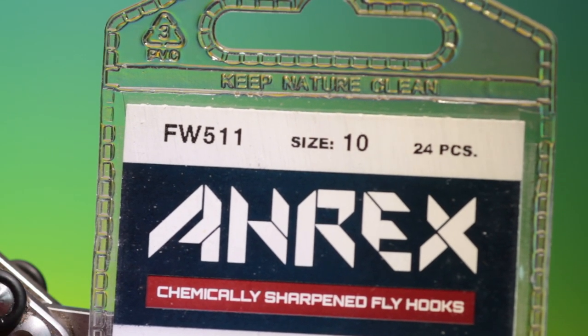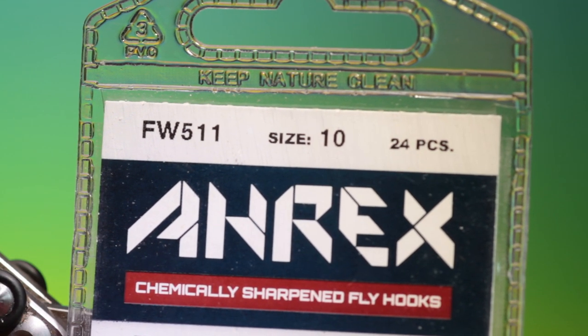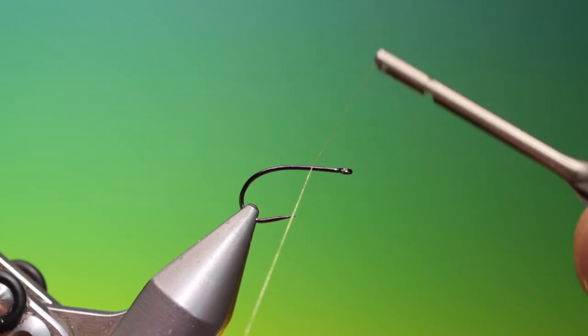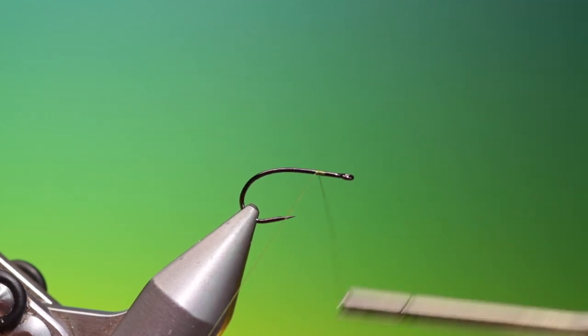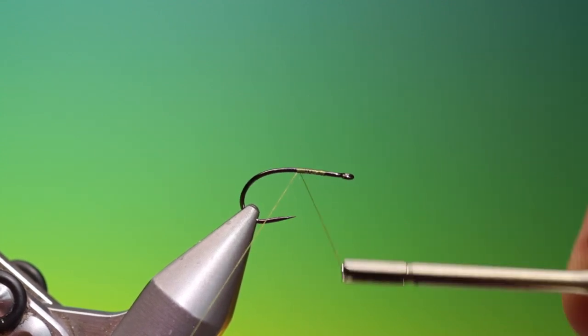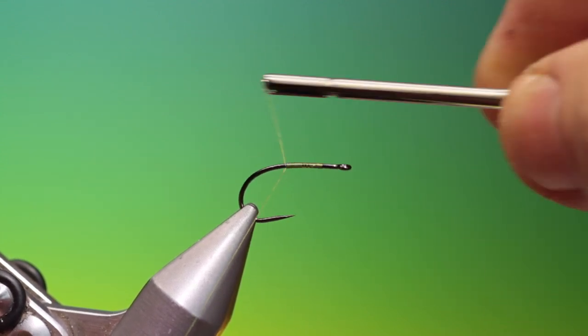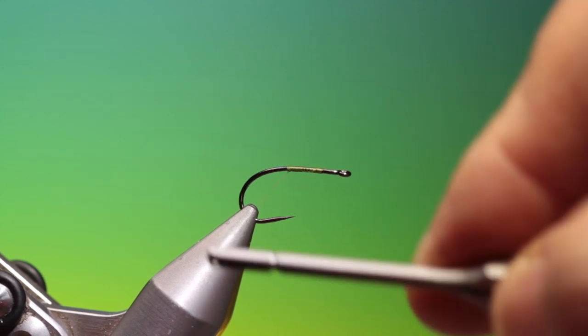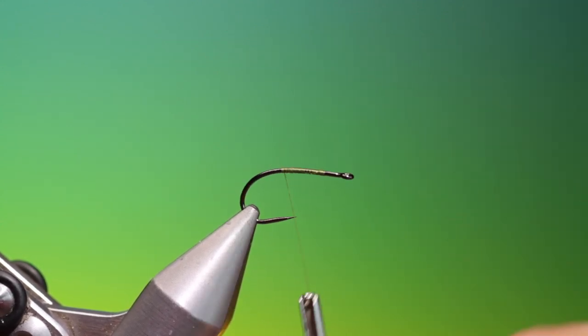We'll start with an RxFW511 size 10 curved dry fly hook. This is a very nice shuttlecock emerger pattern. We put a little bit of tying thread on, go back to about there.